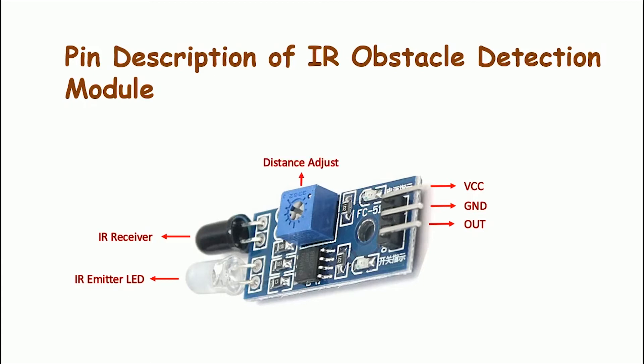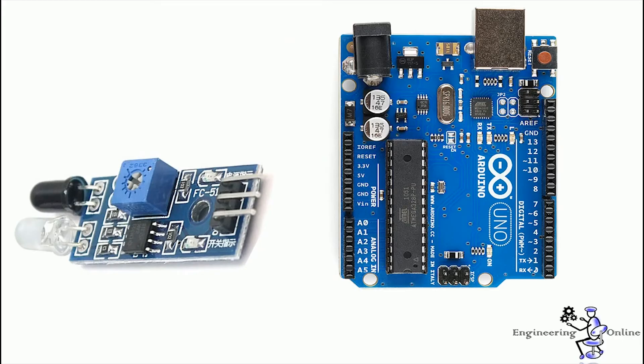You can see a blue-colored potentiometer on the module. It is used to adjust the detection distance. The detection distance decreases if it is rotated in the counterclockwise direction, and the distance increases if it is rotated in the clockwise direction. The module also has two LEDs: the first is the obstacle LED, which is illuminated when there is an obstacle in front of the module, and the second is the power LED, which is illuminated when the module is powered up.